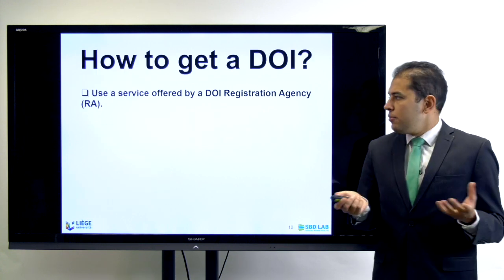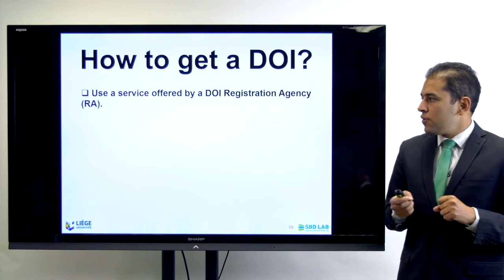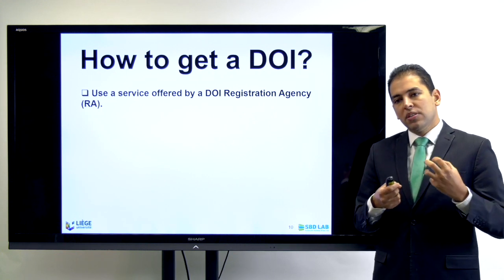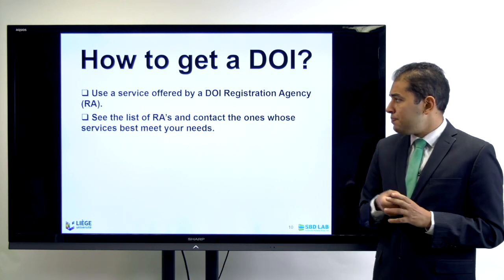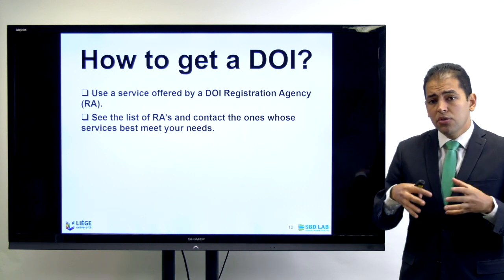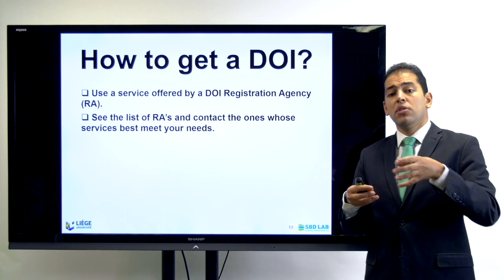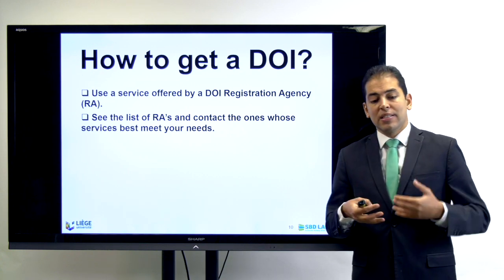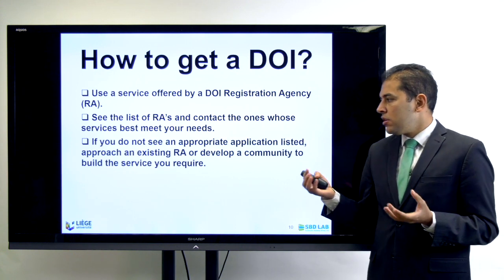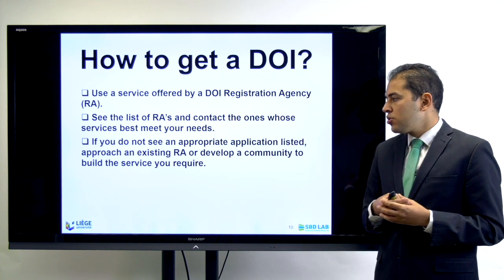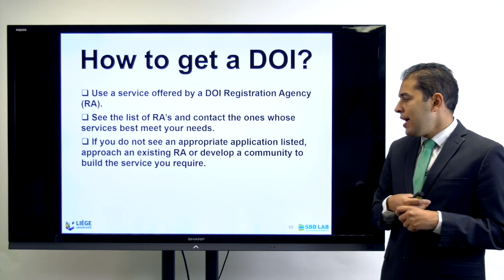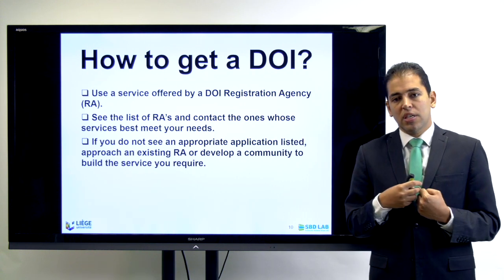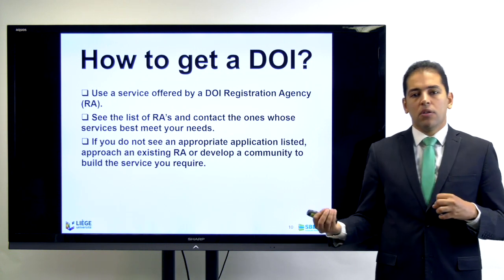Now, how can you get your DOI number? It is a little complicated because you need to use a service offered by a DOI registration agency. First of all, you cannot get it as an individual — you need to get it through an agency. You have to check the list of registration agencies available in your country or at your institution. Maybe your own institution is actually a registration agency itself. If not, you need to approach an existing registration agency in your country and develop a community to build a service. For example, in my lab I am looking to create a registration agency just for my lab's publications so that I can issue my own DOI numbers.